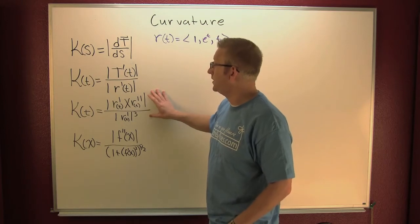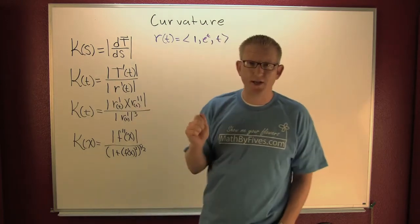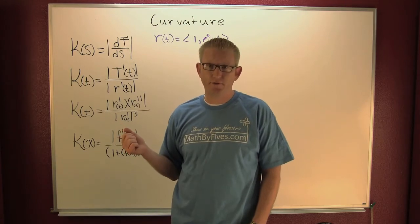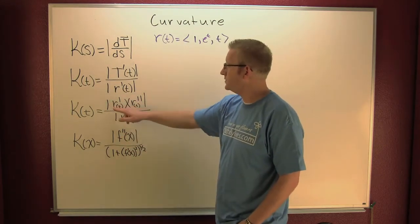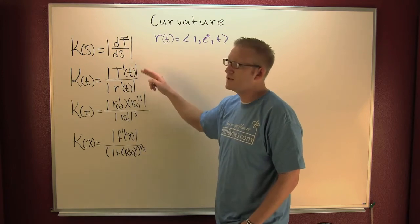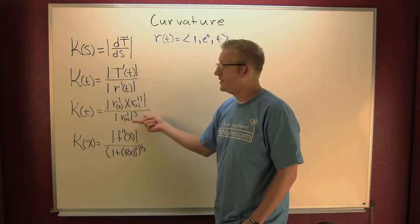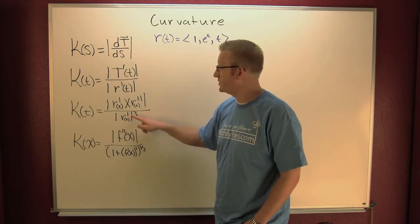And then we went into another derivation where you didn't have to find the unit tangent, where you could just go off of the vector valued functions. And here we see it's the magnitude of the first cross the second divided by the magnitude of the first cubed.